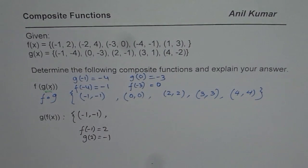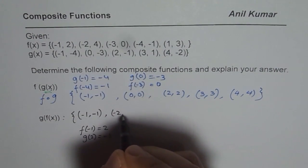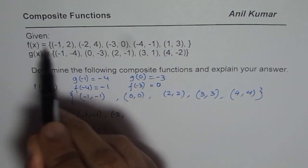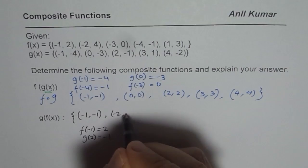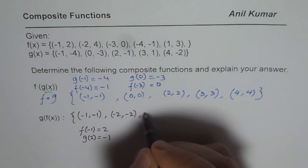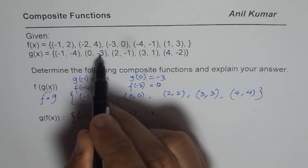Likewise, we will continue. Let us do the next number. The input is minus 2. f of minus 2 is 4, g of 4 is minus 2. Then for minus 3, f of minus 3 is 0, g of 0 is minus 3.